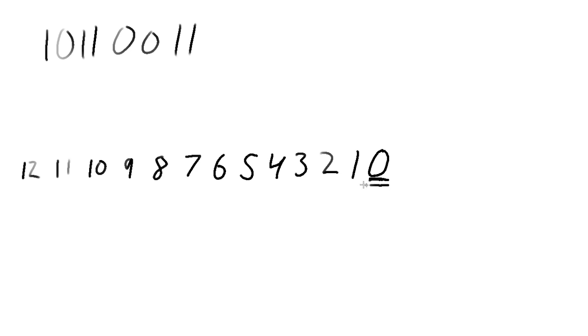And then I like to underline my check bits. So bit 0 is a special bit, so I'm going to underline it twice. Then our single error correction bits are going to be the powers of 2. So 1, 2, 4, and 8.